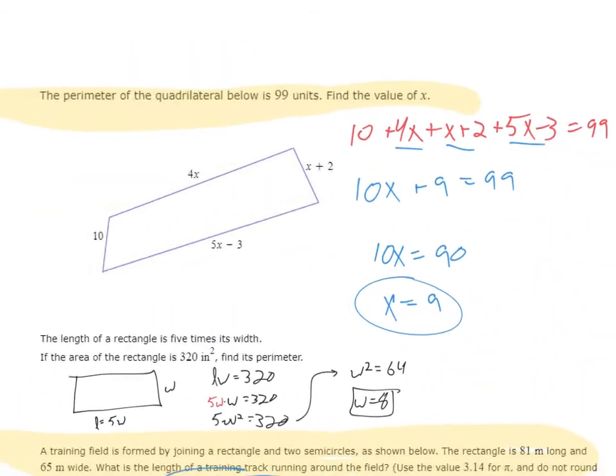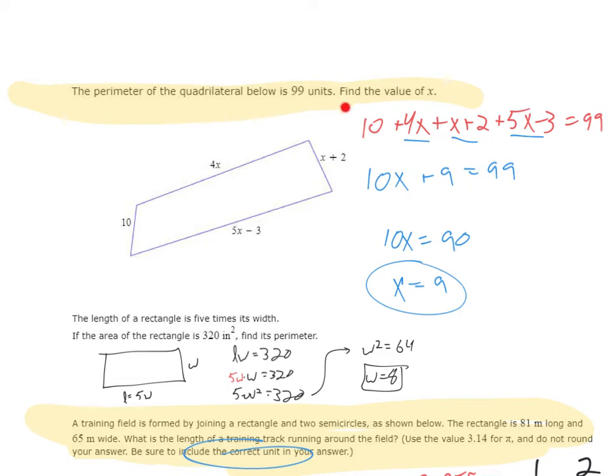Alright, so for the first one we have find the perimeter of the quadrilateral below, or sorry, it's telling us the perimeter is 99, find the value of x. So perimeter just means add up all the sides together, so that's what we did over here and set that equal to 99. We combine like terms on the left-hand side, move the 9 over, divide out the 10, we get x equals 9. So again, the thing that this is really quizzing you on is do you know what that word perimeter means?